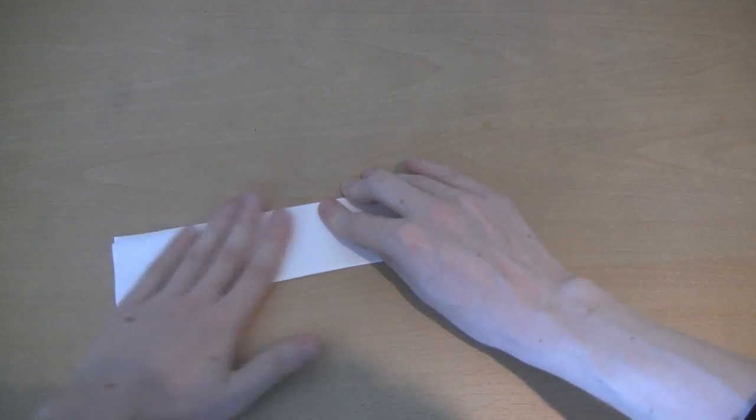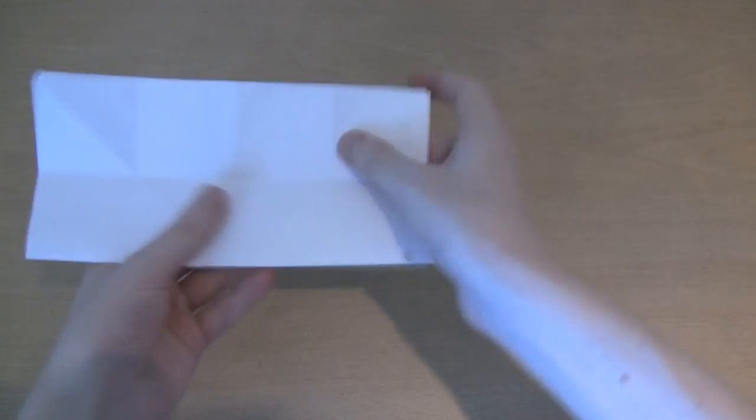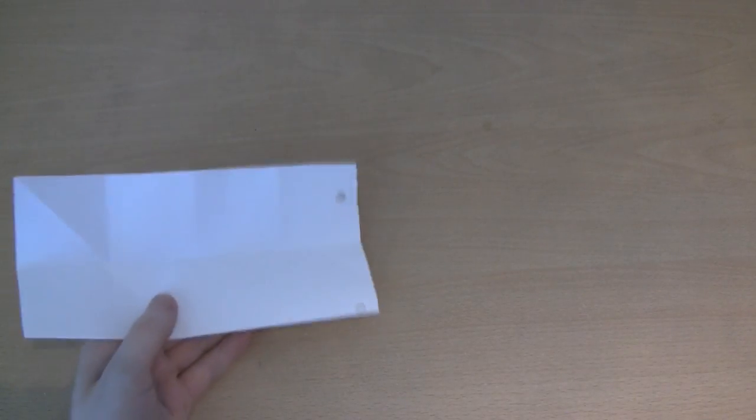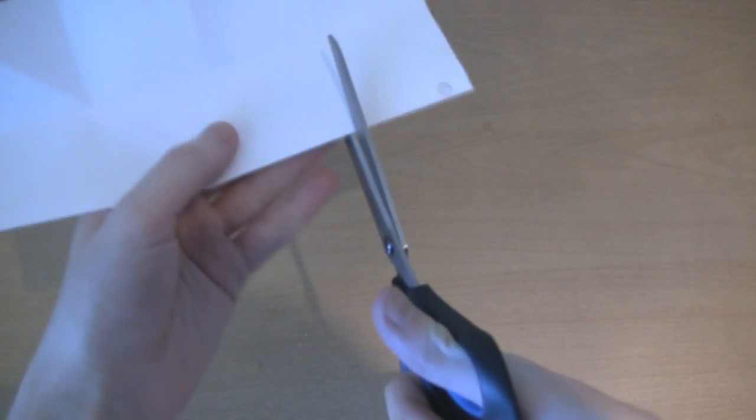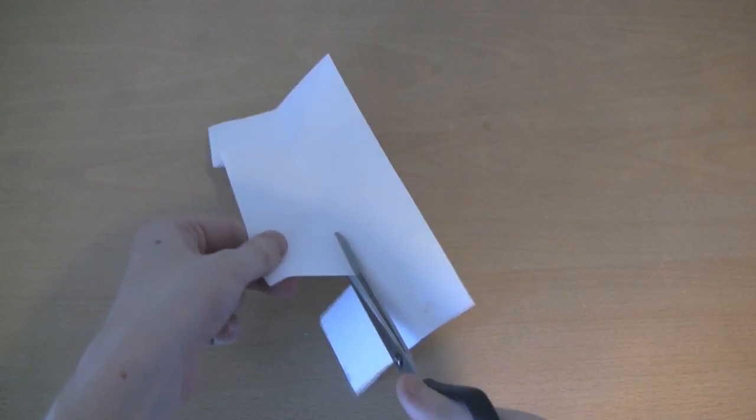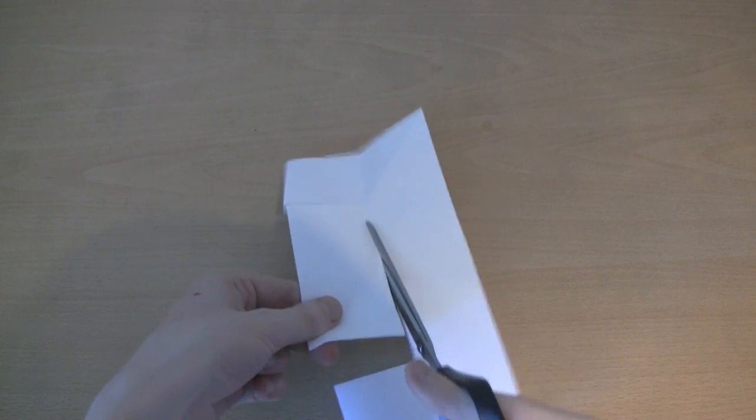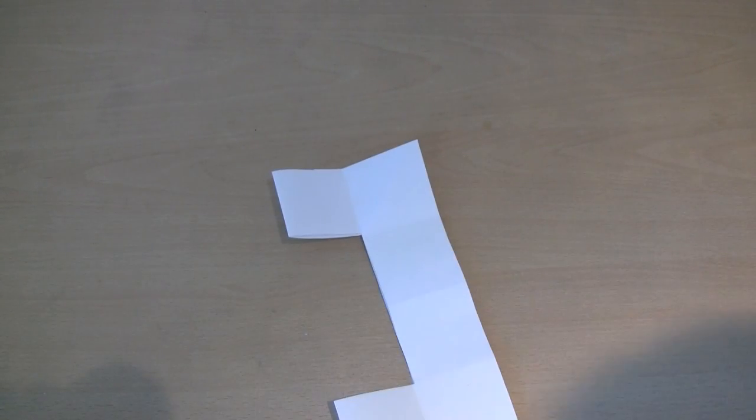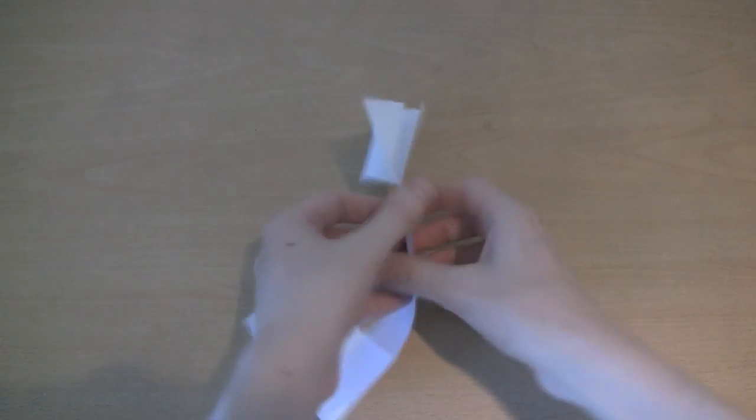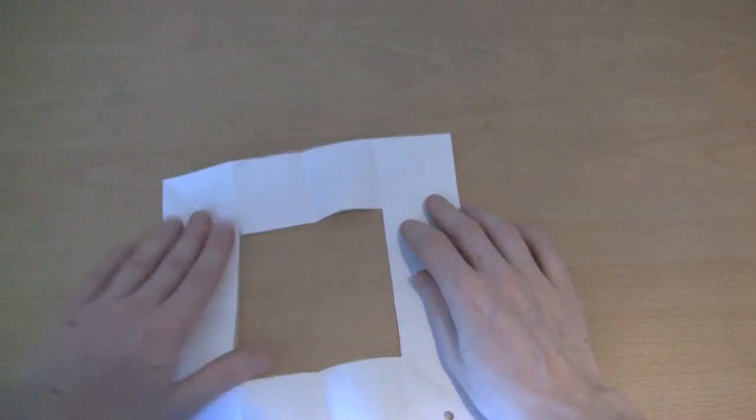Now I'm going to open this up, and what we're going to do is we're going to cut out the middle bit here. So I'll just take my scissors again, and I'll cut here, and here, and just cut out the middle bit, like so. And if I open it up, this is what we have.